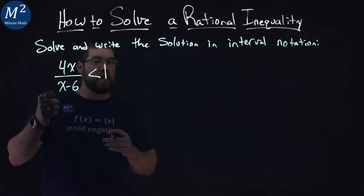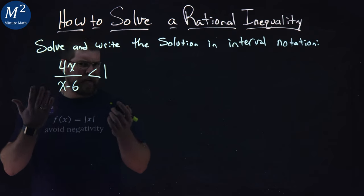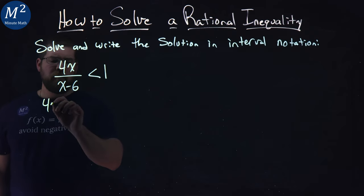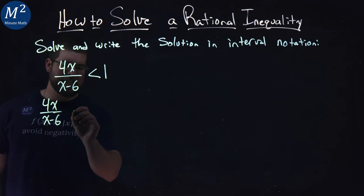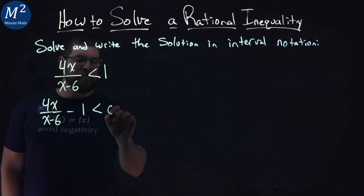So we want to bring the 1 over to the left-hand side. To do it, I'm going to subtract 1 from both sides, and I have 4x over x minus 6, minus 1 is less than 0.